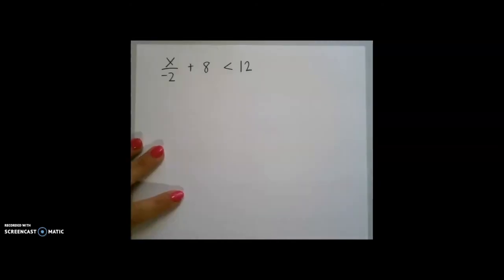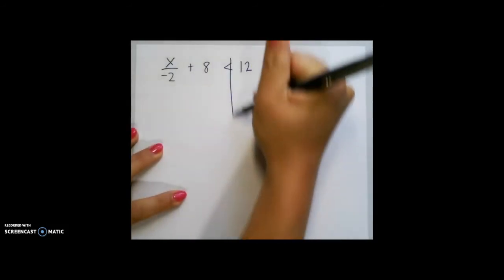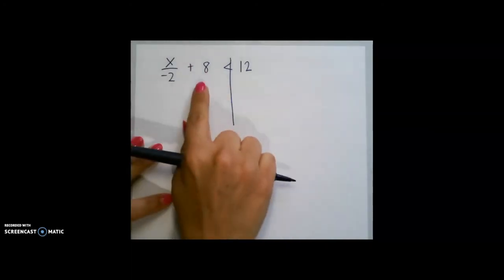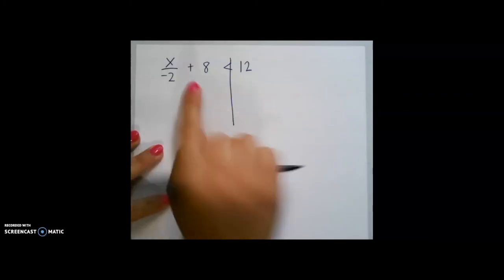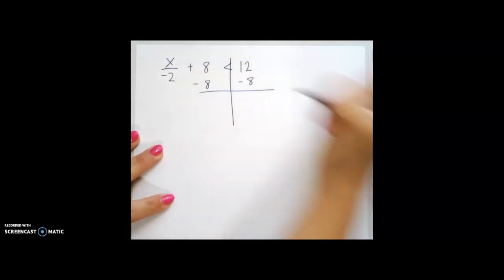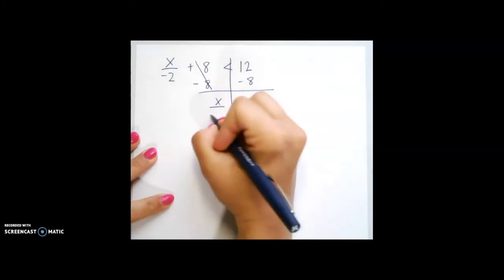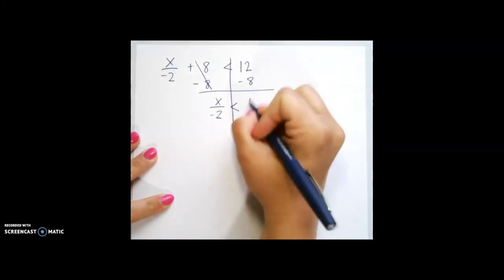For this last example, feel free to pause the video here to try this one on your own or continue watching to see how I solve it. First, again, we want to do the inverse of any addition or subtraction. So I'm going to subtract 8 on both sides. This cancels out and leaves us with x divided by negative 2 is less than 4.